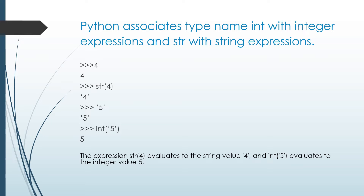We can see Python programs associating the type name int with integer expressions and str with string expressions. I gave 4 as an integer and got output as integer. I gave type() of an integer expression in single quotes and got a string format output. I gave '5' in single quotes and got output '5'. When I gave int('5'), instead of getting a string I got the integer 5, because the class name is int. So int('5') evaluates to integer 5, and str(4) evaluates to the string '4'.